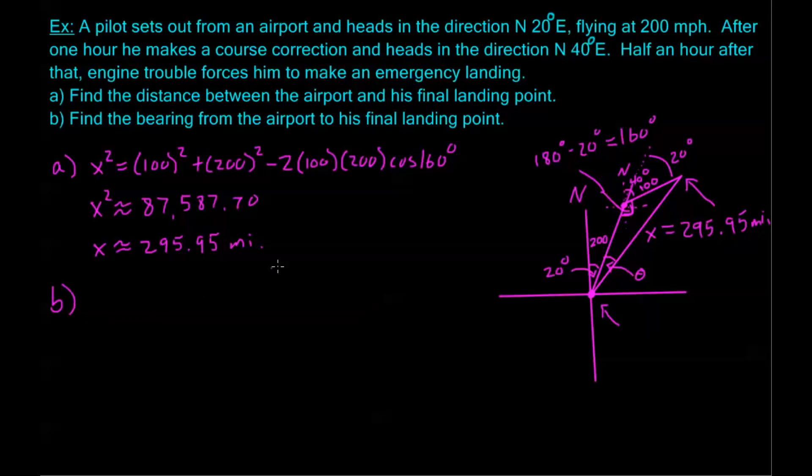Now for part B, I want to know the total bearing from the airport where we started to the point where the plane landed. Now that bearing is going to be 20 degrees plus theta, or I should say north 20 degrees plus theta east. We already have this 20 degrees. So if I can find the theta on the inside of the triangle, that's going to give me this total angle from north to the bearing directly from the airport to our landing point. So what I need to do here is I need to solve for theta. Now here, we can use law of cosines again, and we can have this 100 squared equals 200 squared plus 295.95 squared and so on, ending with cosine of theta. But instead, I'm just going to use the law of sines. Because I introduced this side x, I have enough information now to use the law of sines.